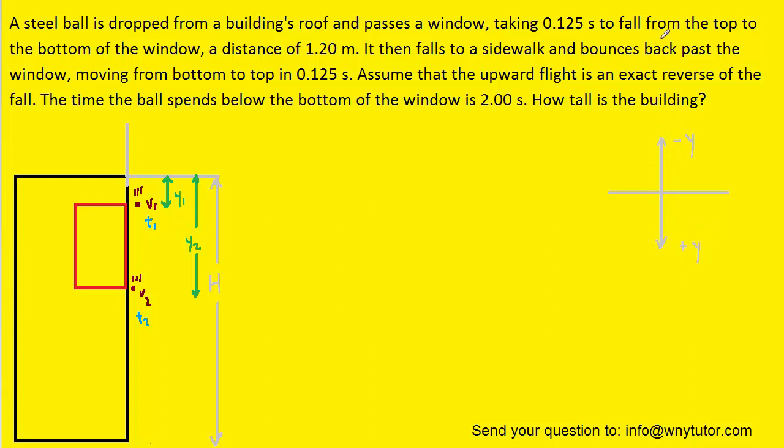The question notes that from the top to the bottom of the window is a distance of 1.2 meters. So from our drawing, we know that Y2 minus Y1 is equal to 1.2 meters. We also know that it takes 0.125 seconds for that fall to occur from the top of the window to the bottom. And so we can say that T2 minus T1 is equal to 0.125 seconds.